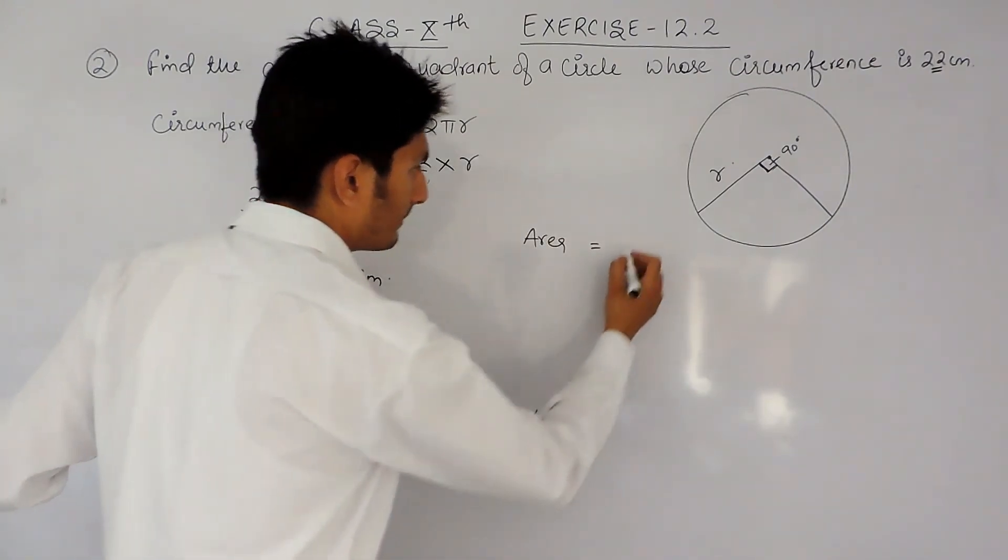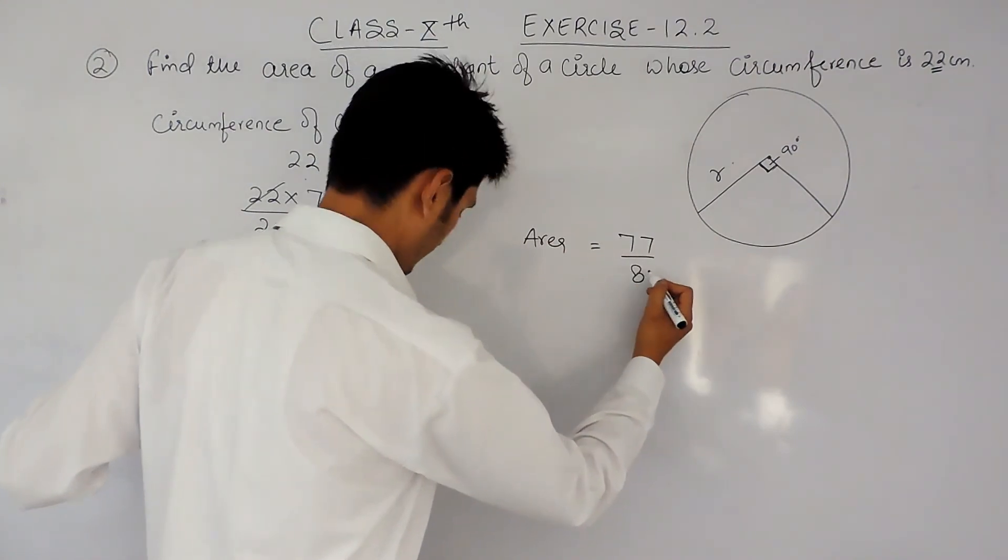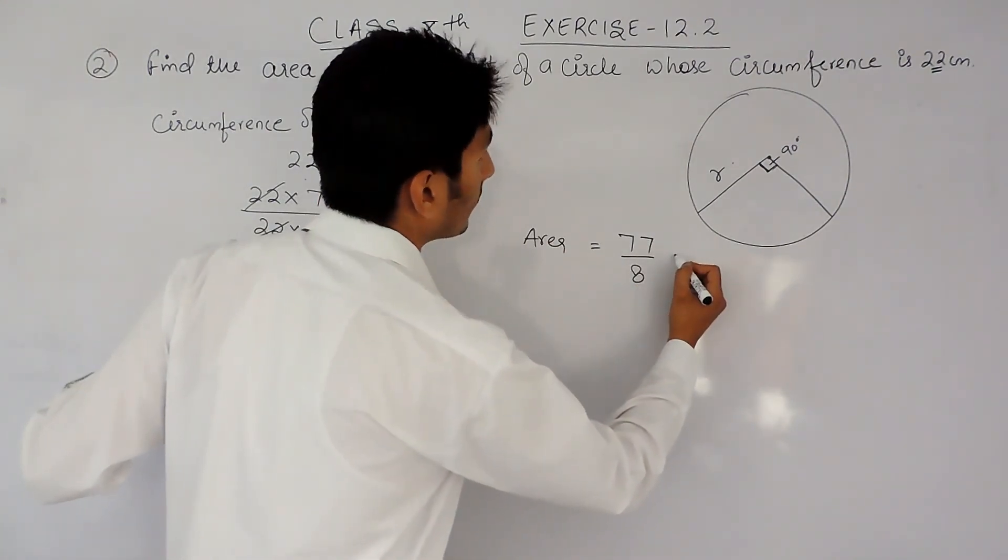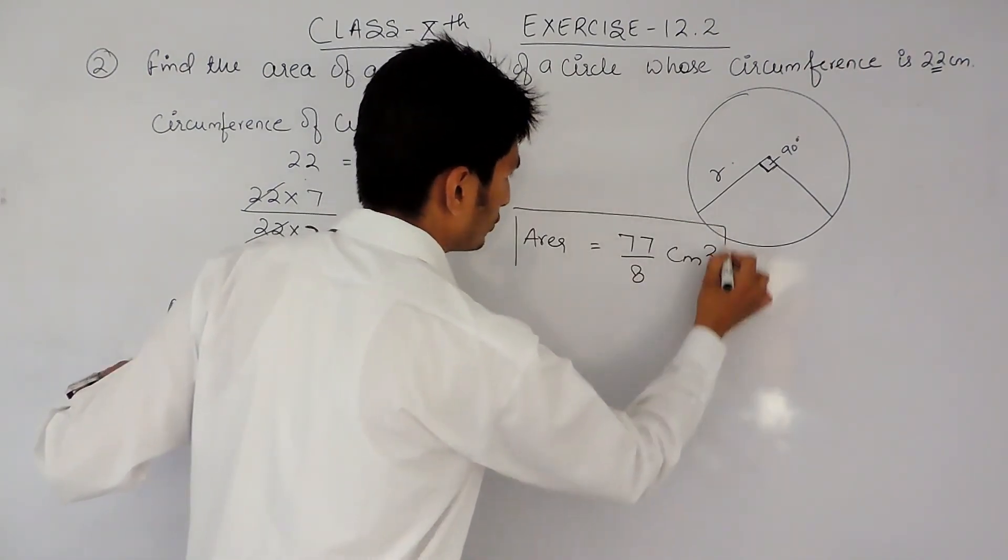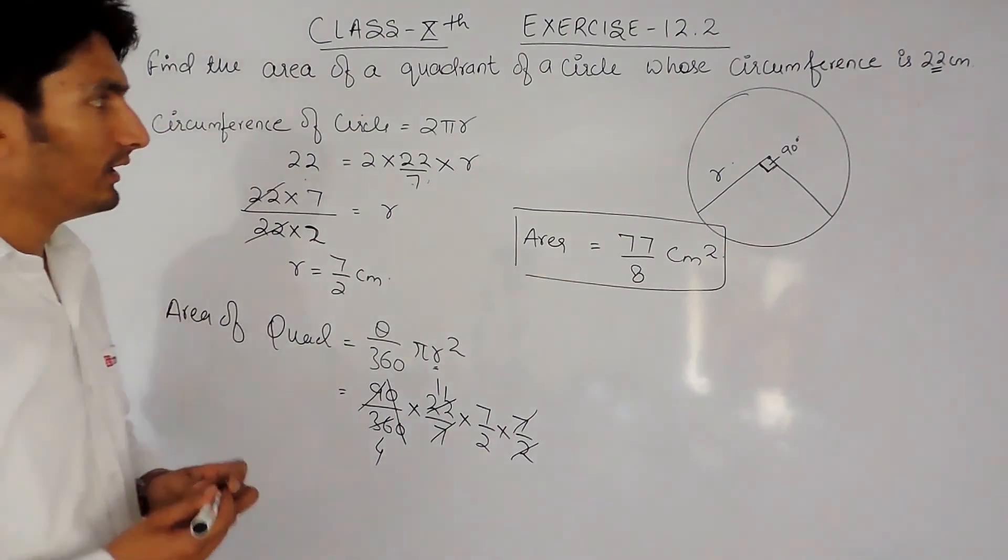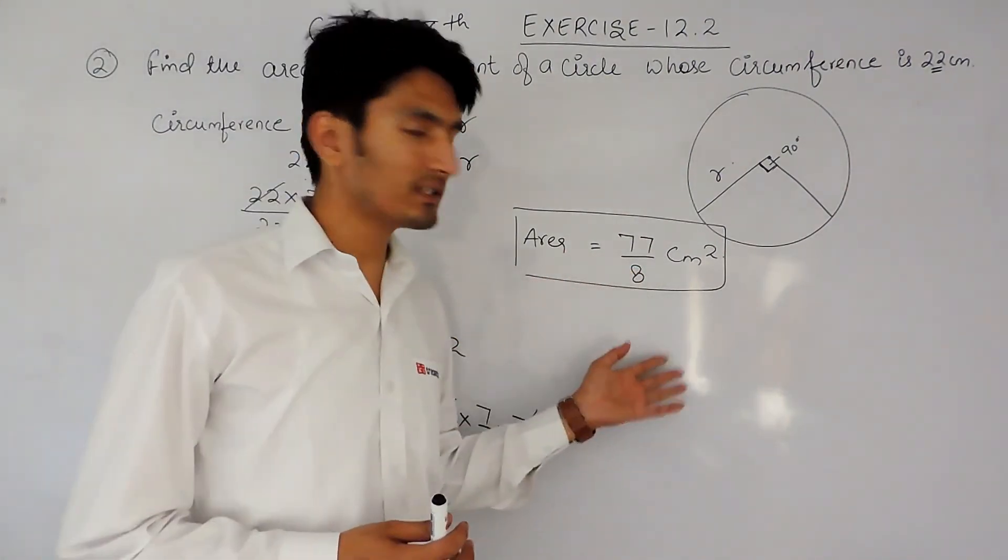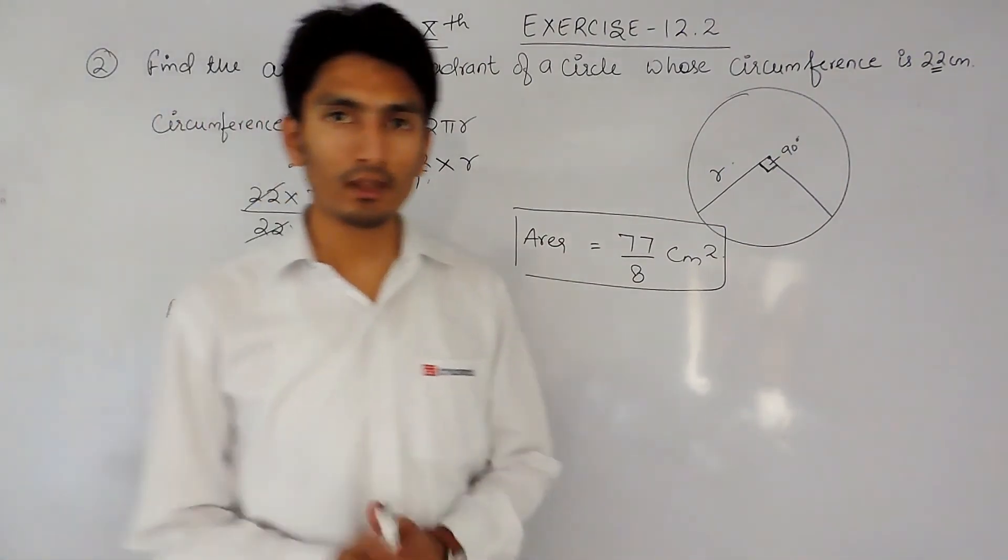So 11 multiplied by 7 will be 77, and 4 multiplied by 2 will be 8. This is in centimeter square, so the area of a quadrant equals 77/8 centimeter square. And if you want to convert this fraction into decimal, you can divide this and convert it into decimals.